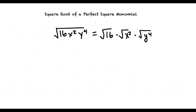Let's evaluate those individually off to the side first. The square root of 16 is going to be 4, since 4 times 4 is 16. The square root of x squared is going to be x, since x times x is x squared.